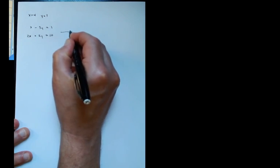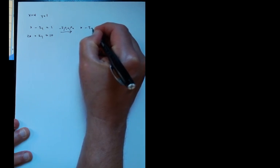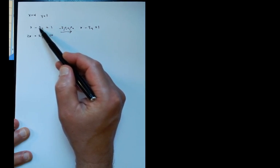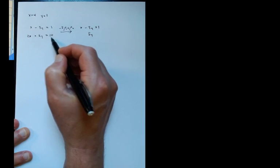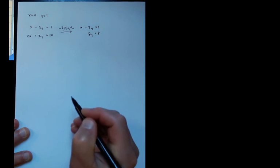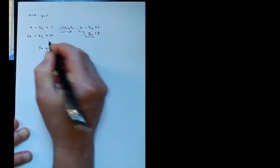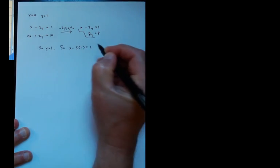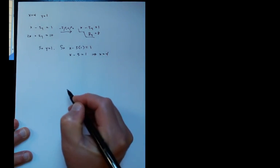Let me apply Gauss's method. I'm going to use the x to get rid of the 2x — that's minus 2 times row 1 added to row 2. The first equation x minus 3y equals 1 doesn't change. After the operation, we get 8y equals 8, which is in echelon form. From this, y equals 1, and substituting back, x minus 3 times 1 equals 1, so x equals 4.